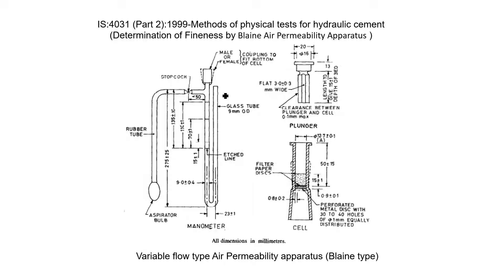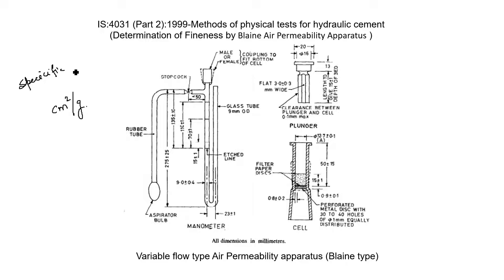The strength and setting time of concrete is highly governed by the fineness of cement. There are various methods to find the fineness of cement. The Blaine air permeability test is one of those tests. The Blaine air permeability apparatus is used to determine the fineness of cement as represented by the specific surface area of OPC.